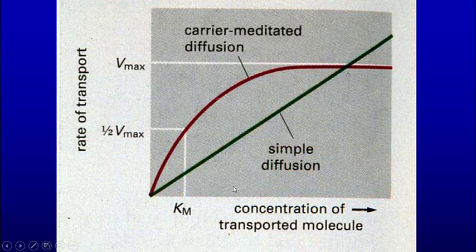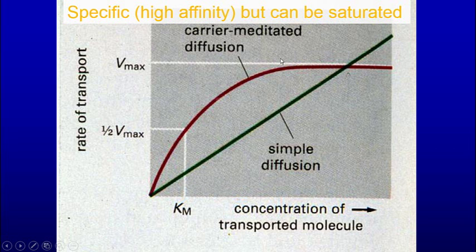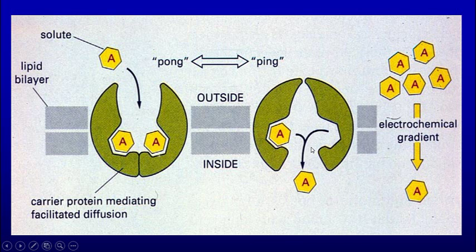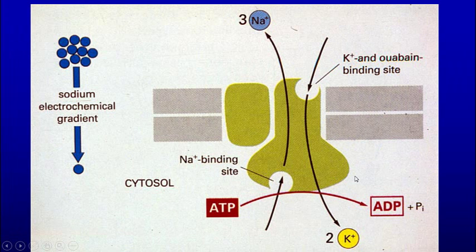Here's a graph showing the concentration of things on one side versus the rate of transport through the membrane. With simple diffusion, the more you have on one side, the more crosses. With carrier-mediated diffusion, there's a higher affinity — a lower concentration gets more in. But it's saturable: you have high affinity but a limited number of carrier proteins, so adding more substrate won't increase transport further. Here we see how the ping-pong carrier protein works — once its cargo is loaded, it flips to the other side, causing a conformational change, and releases its cargo down the concentration gradient.